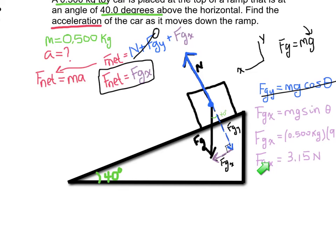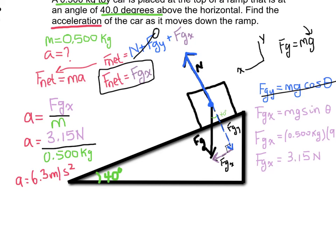So let's go ahead and rearrange our equation. I can divide both sides by mass to cancel mass on the right side of the equation. I'll end up with acceleration is equal to Fnet, which is just Fg in the x, over mass, which we do know. So let's go ahead and plug in our numbers and find the acceleration. And so acceleration is equal to 6.3 meters per second squared.